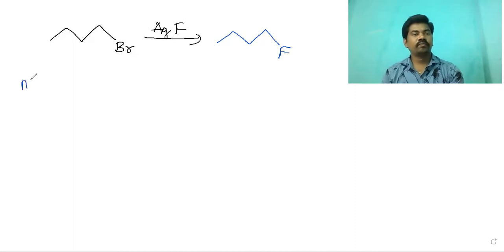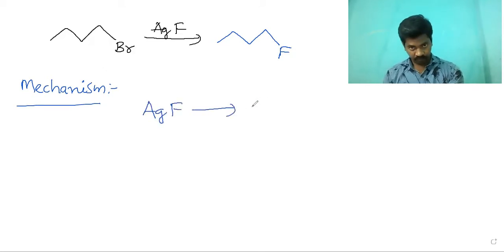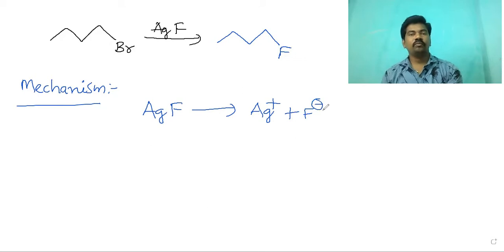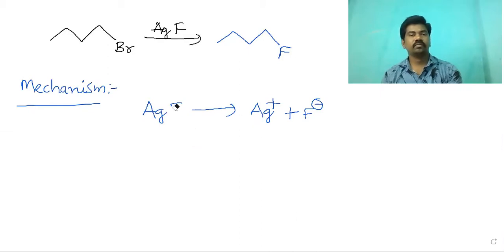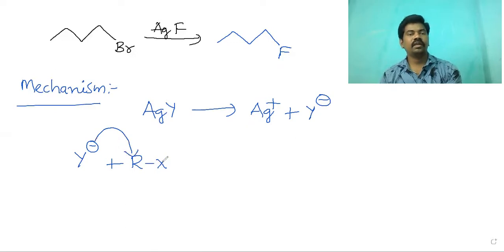In the mechanism, first silver fluoride splits into Ag+ and F−. The F− ion then acts as a nucleophile. Similarly, the alkyl halide RY splits, with Y− leaving, allowing F− to substitute and form the alkyl fluoride.